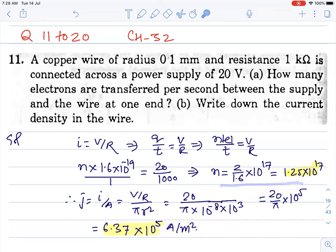We will put value and you can just solve it. Number of electrons will be 1.25 times 10^17. And second part, write down the current density.